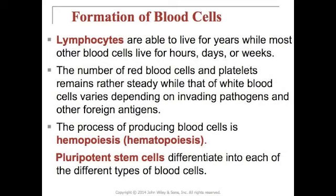Lymphocytes are able to live for years, while most other blood cells live for hours, days, or weeks — a good quiz or exam question. The number of red blood cells and platelets remains rather steady, while that of white blood cells varies depending on invading pathogens and other foreign antigens. The process of producing new blood cells is called hemopoiesis or hematopoiesis, and pluripotent stem cells differentiate into each of the different types of blood cells.